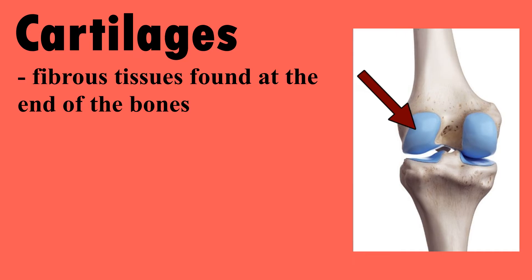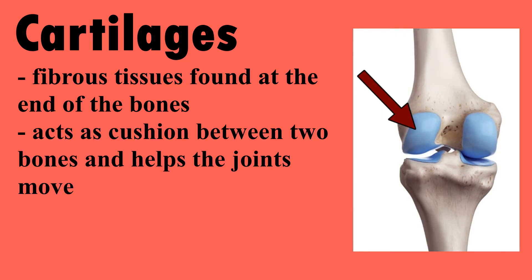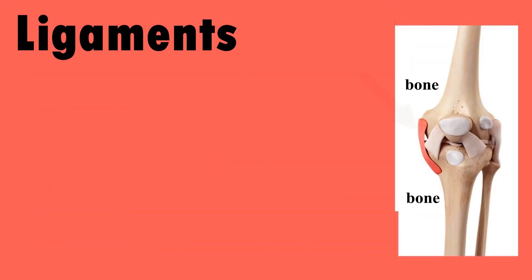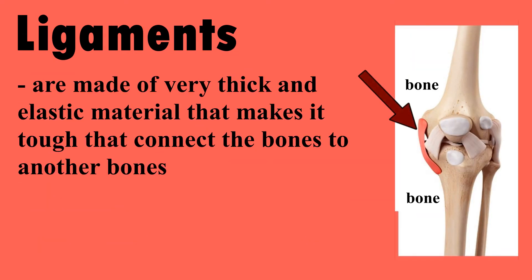Cartilages are fibrous tissues found at the end of bones. They act as a cushion between two bones and help the joints move. Synovial fluid is an oil-like fluid that lubricates the bones. Ligaments are made of very thick and elastic material that connects bones to other bones.